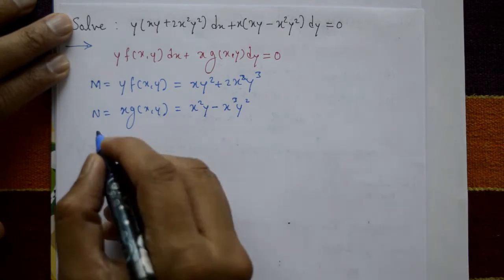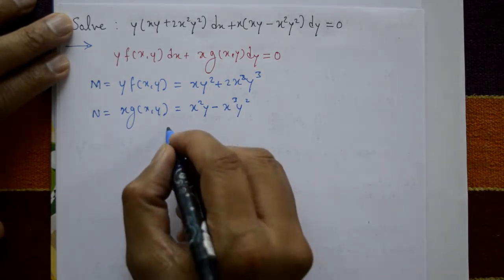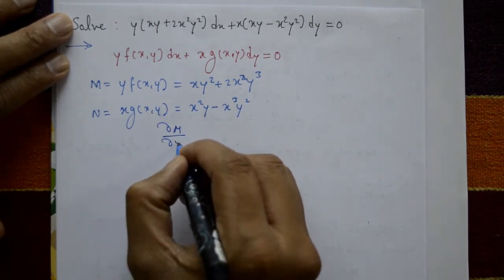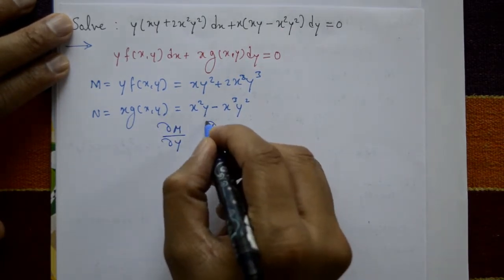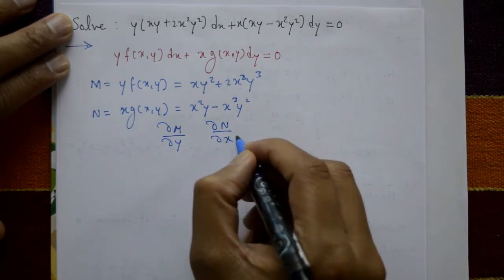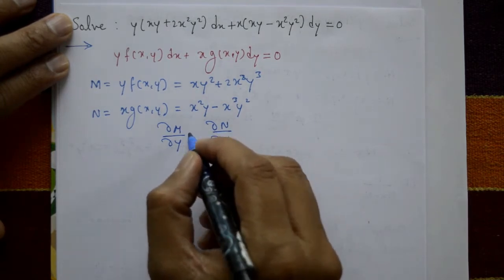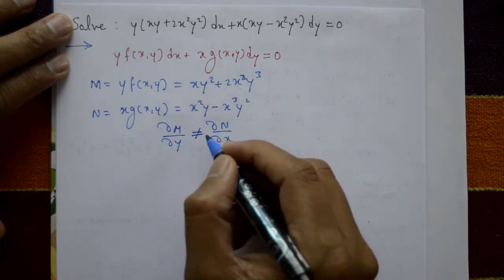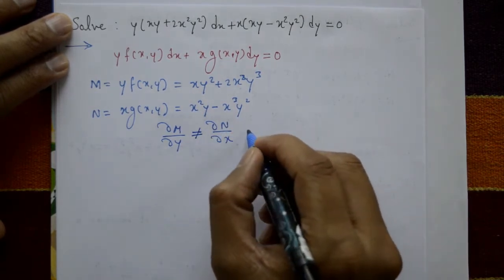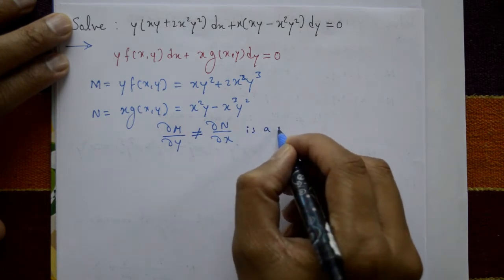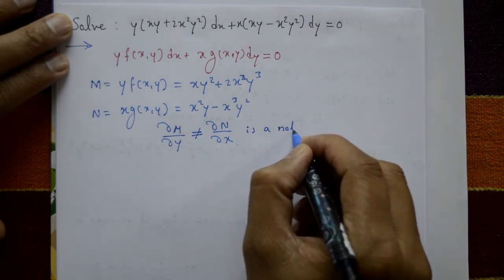Differentiating M with respect to y and N with respect to x partially, both are not equal, meaning the equation is not exact.